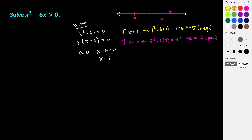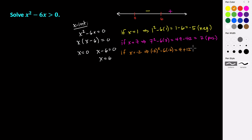Now let's pick a number to the left of 0 — let's try negative 2. If x equals negative 2, we have negative 2 squared minus 6 times negative 2. Negative 2 squared is 4, and negative 6 times negative 2 is positive 12. So 4 plus 12 is 16, which is a positive number. So values to the left of 0 are going to be positive.